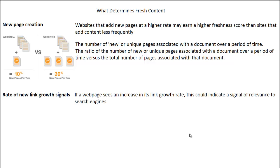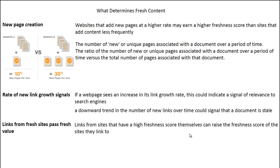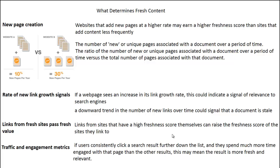The rate of new link growth is also a signal. If a web page sees an increase in its link growth rate, this could indicate relevance to search engines. Similarly, a downward trend in new links over time could signal that a document is stale. Links from fresh sites pass fresh value — in the same way that links from authority sites pass authority, links from sites with a high freshness score can raise the freshness score of the sites they link to. Traffic and engagement metrics also play a role: if users consistently click a result further down the listing and spend much more time engaged with it, this may indicate the result is more fresh and relevant, and you may get a freshness boost.